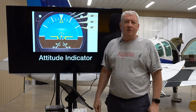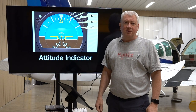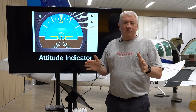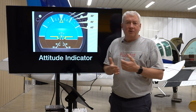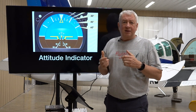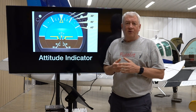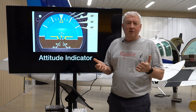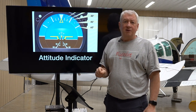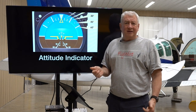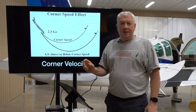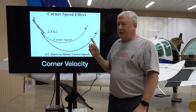Let's look at some other tools we need for orientation. If there's a horizon outside the window I recommend using it, but if not we need an attitude indicator. We're going to look at steam gauges and a couple of glass representations — if it's dark or gray outside the window, the AI is truly our friend. The other tool we need is an airspeed indicator.